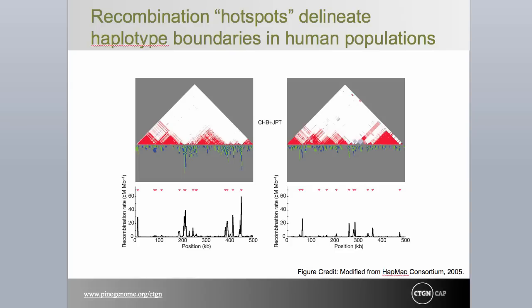In the Haplovue slide shown previously, we viewed an LD plot at a rather restricted level. This diagram shows the extent of long-distance LD on chromosomes 2Q and 7Q for Chinese and Japanese populations from the human HapMap project. These diagrams make two important points. First, the distribution of LD is not uniform. Second, Haplovue blocks are bounded by regions of higher rates of recombination, as indicated by peaks of recombination rates shown below. Such patterns tell us that recombination and LD are related, and that different portions of the human genome are more blocky than others.